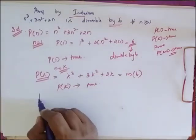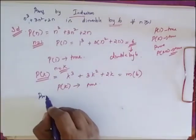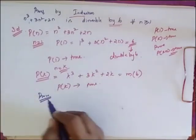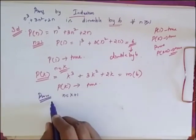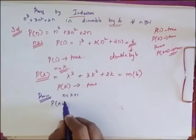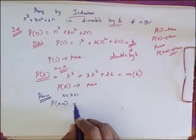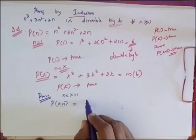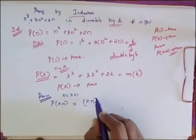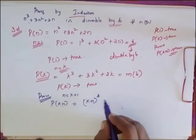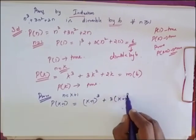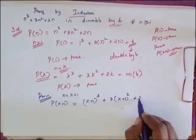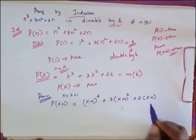Now I have to prove for n = K+1. That is, I have to prove P(K+1) is true. So P(K+1) is equal to (K+1)³ + 3(K+1)² + 2(K+1).